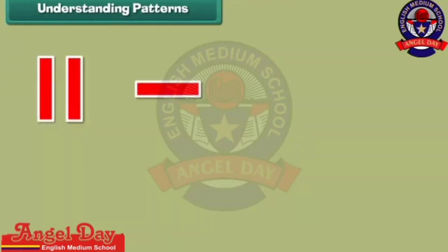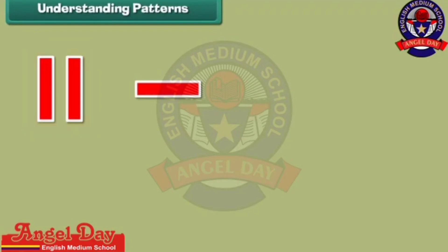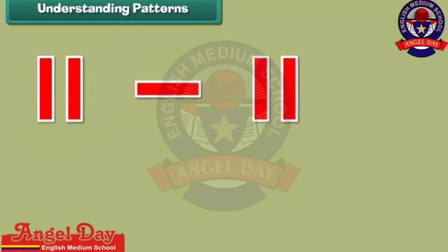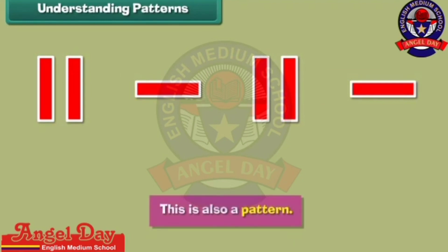Look at one more arrangement. In this arrangement, two standing lines are followed by a sleeping lion. Then again, two standing lines are followed by a sleeping lion. This is also a pattern.